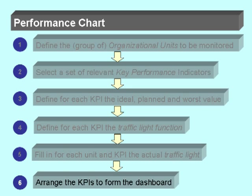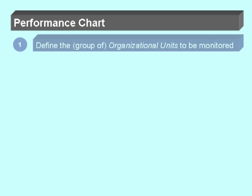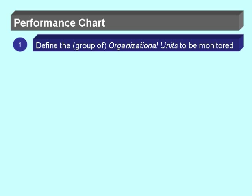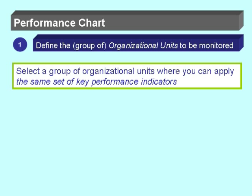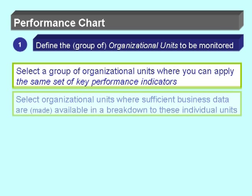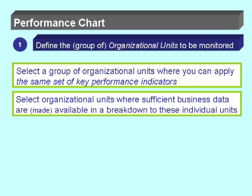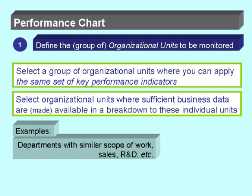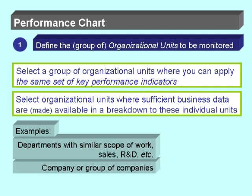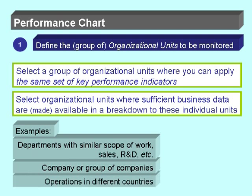In the first step, we need to define the group of organizational units to be monitored. We need to select a group where you can apply the same set of key performance indicators, and of course we need to select organizational units where sufficient business data are available. Examples could be departments with a similar scope of work, sales departments, R&D departments, a company or group of companies, or operations in different countries.